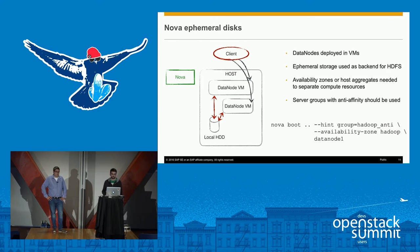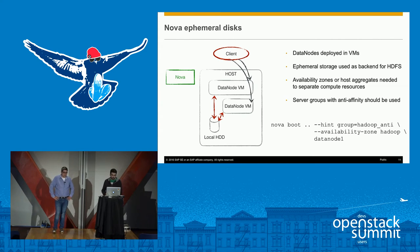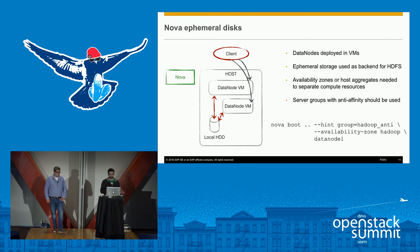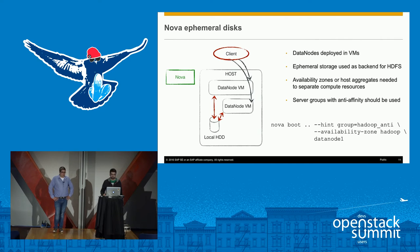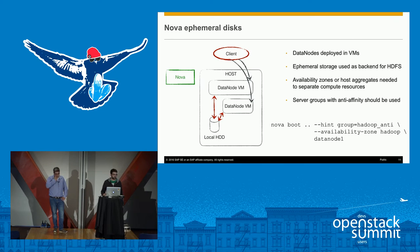For the storage here, the first solution that comes to mind is using ephemeral storage provided with each Nova instance. But using ephemeral storage as a backend for HDFS has a problem: you just have some capacity and the Nova scheduler cuts out capacity from the host for your node. For example, if you use the standard filesystem backend, every VM will just create a file in the host filesystem. With the LVM driver you have a bit more flexibility, but you still have the problem that all your data nodes are accessing the same physical resources on the host, which may impact performance when many data nodes compete for the same physical resources.